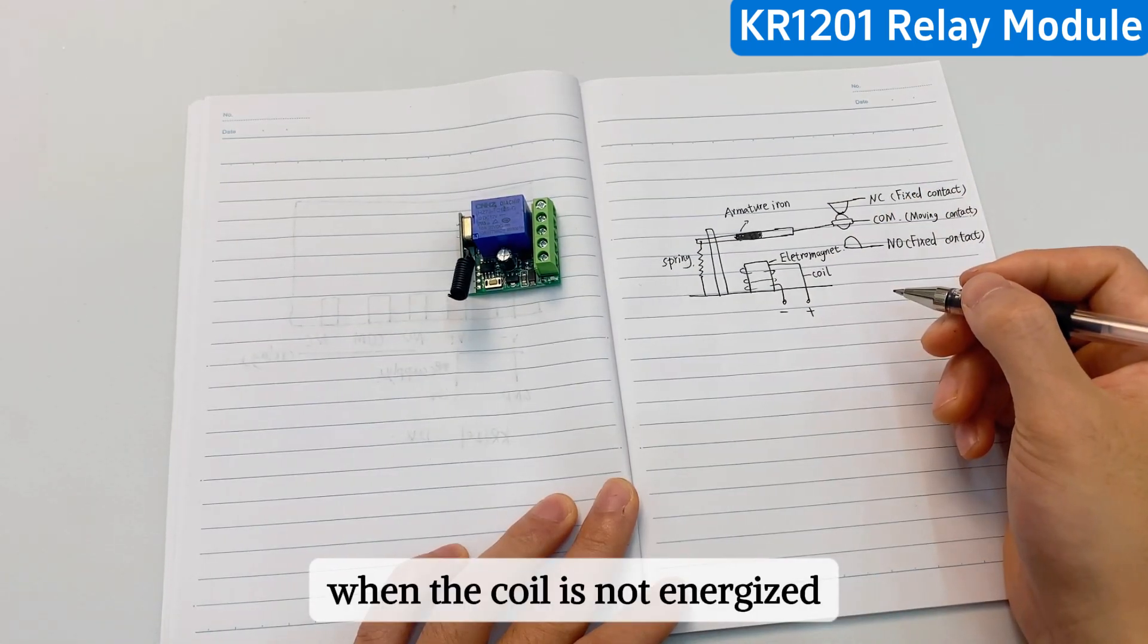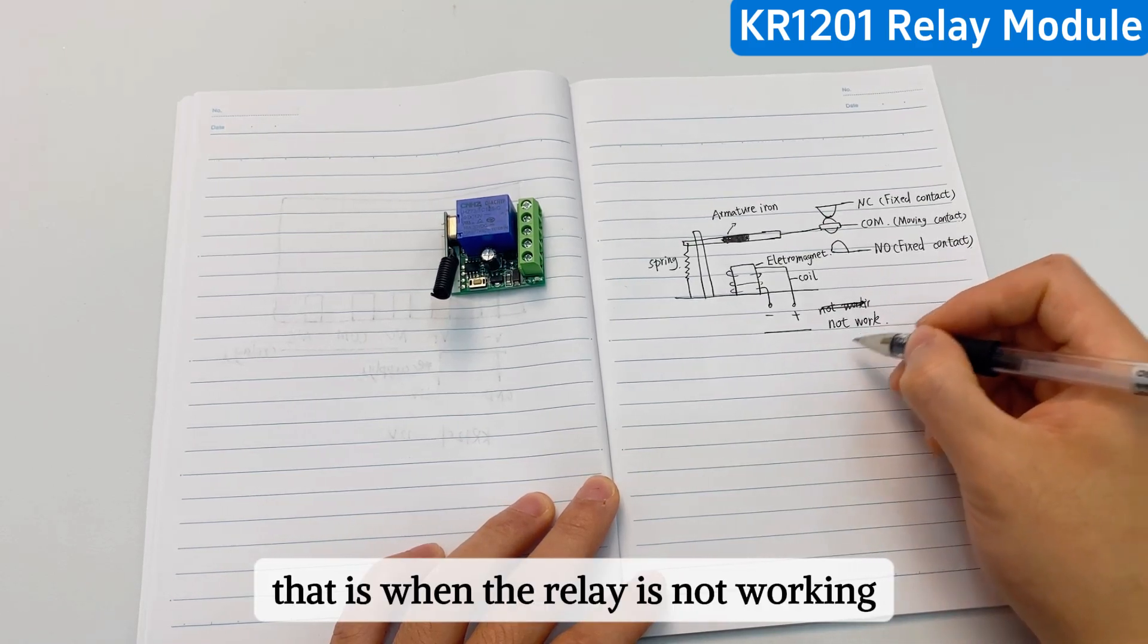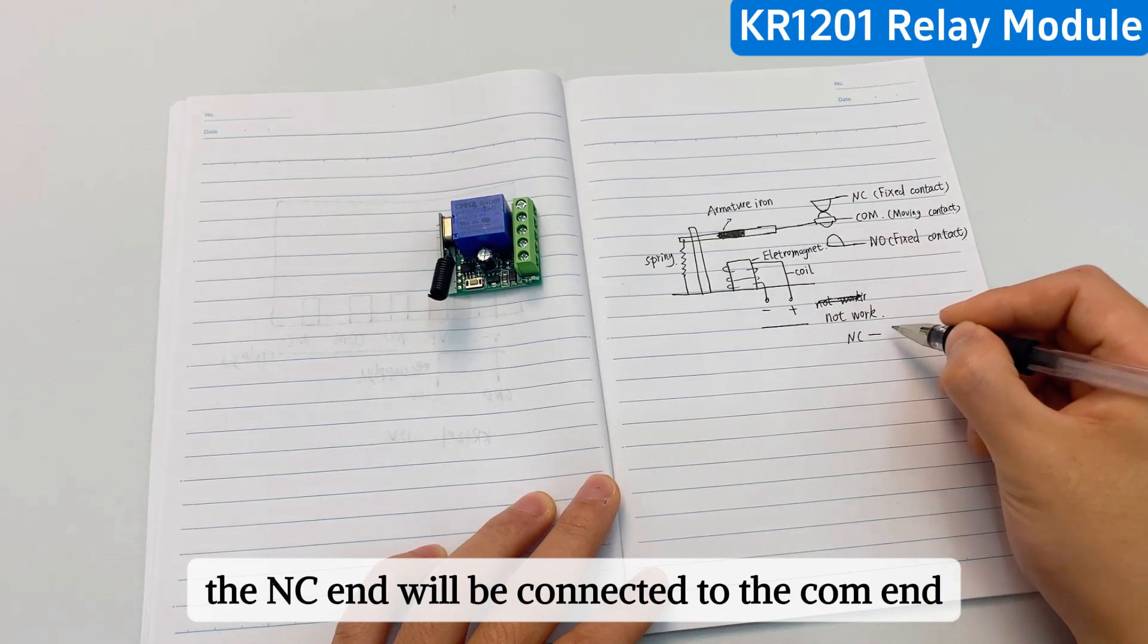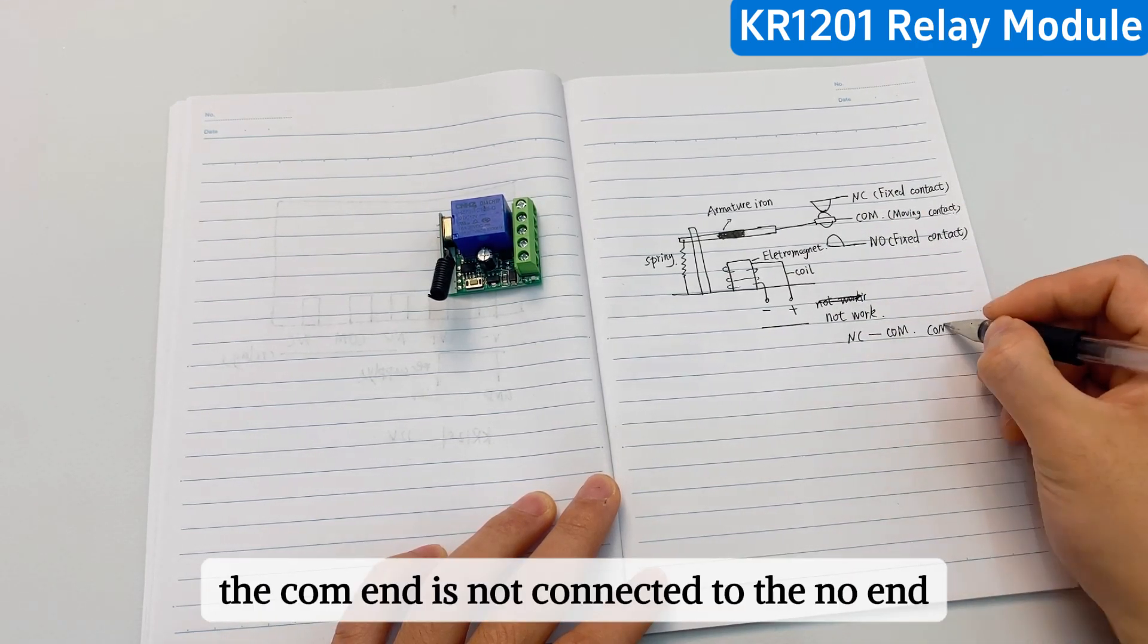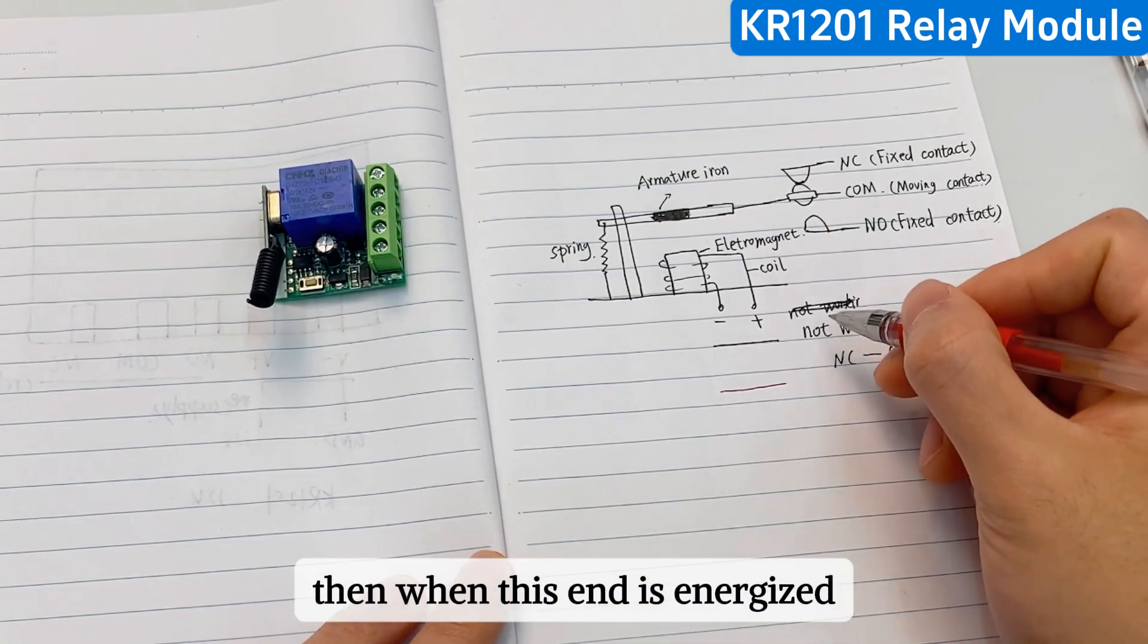When the coil is not energized, that is, when the relay is not working, the NC end will be connected to the com end. The com end is not connected to the NO end. Then when this end is energized, that is, when it works.